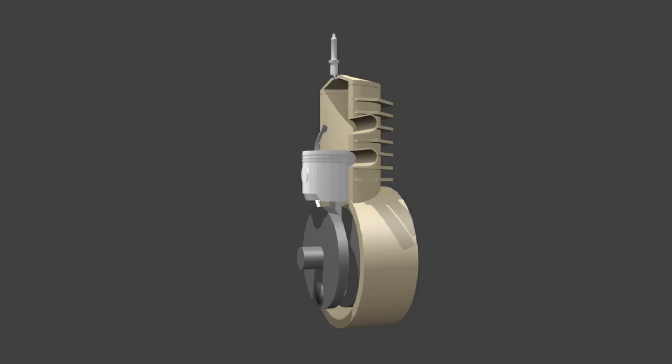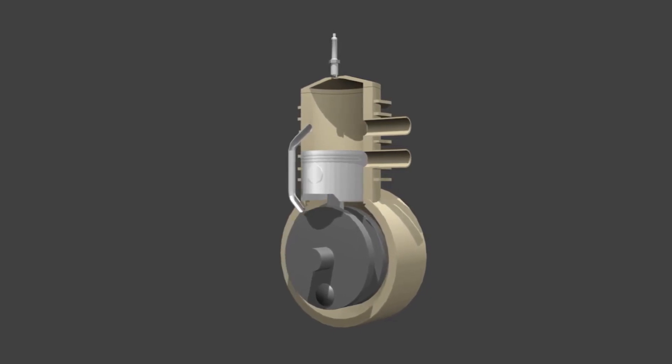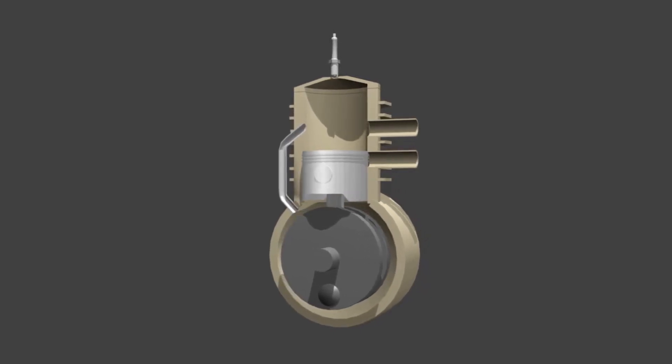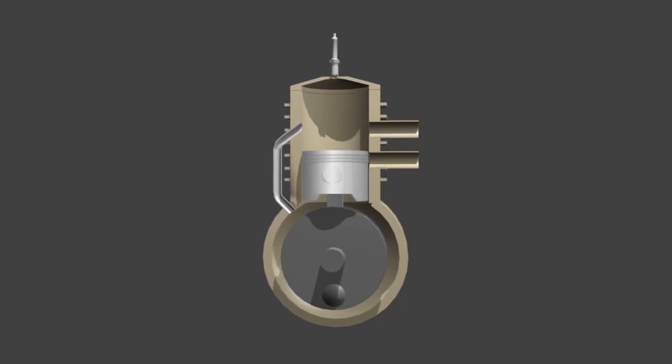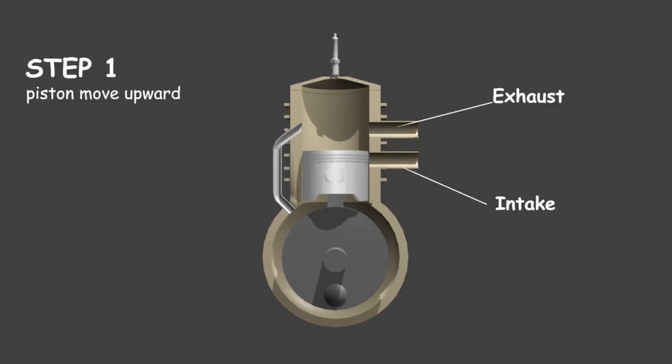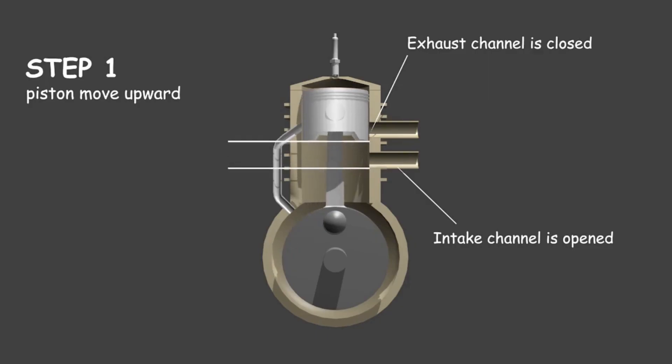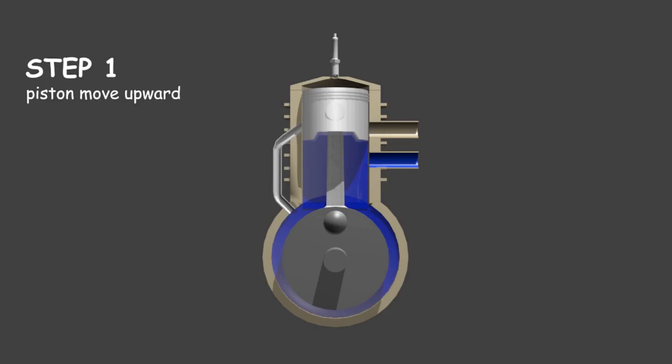Then the question is, how to make the combustion happen continuously? In a two-stroke engine, there are only two steps for combustion to occur continuously. The first step is when the piston moves upward. When the piston moves upward, the space under the piston is enlarged. In addition, the intake channel that was originally covered by the piston wall is now open. This condition causes the air and fuel mixture to be sucked into the crank chamber.